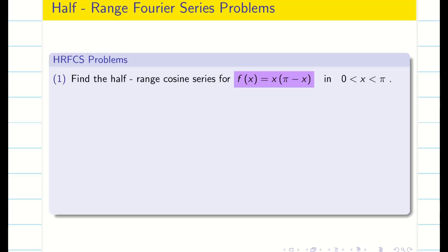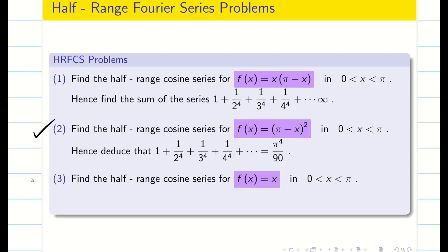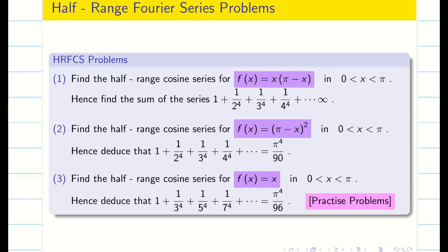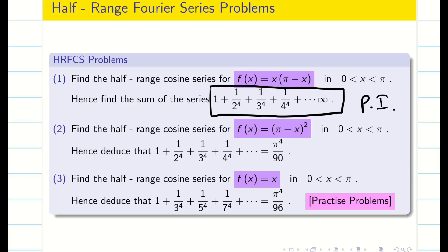Now let us go into the problem. The second and third problems are straightforward — you can do them yourself since we did a similar problem for (L−x)² in the interval (0, 2L). I am going to concentrate on the first problem: f(x) = x(π − x). The deduction here involves power 4, not simply a square, so we may have a chance of using Parseval's identity.